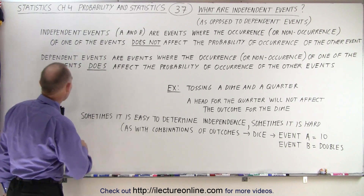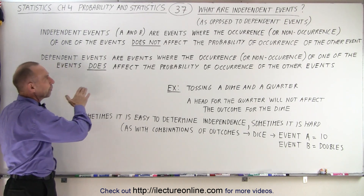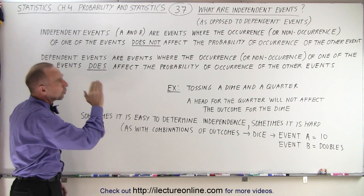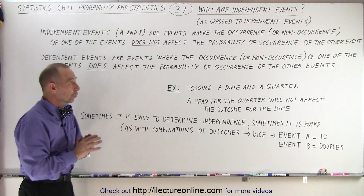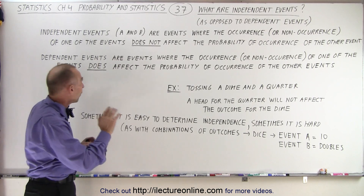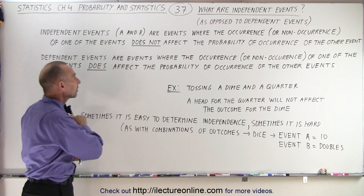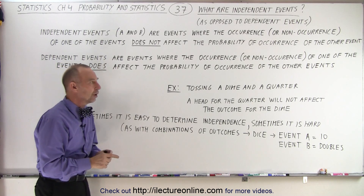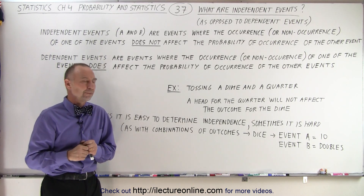But if we have dependent events, these are events where the occurrence or non-occurrence of one of the events does affect the probability of occurrence of the other event.